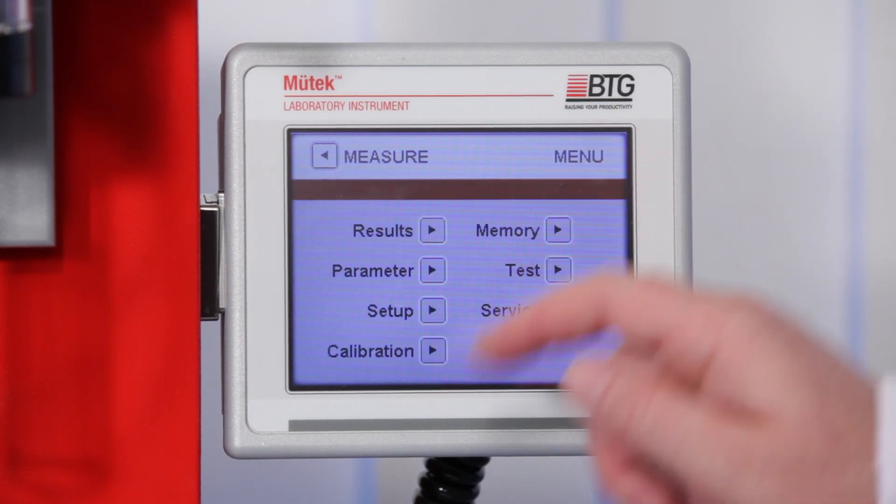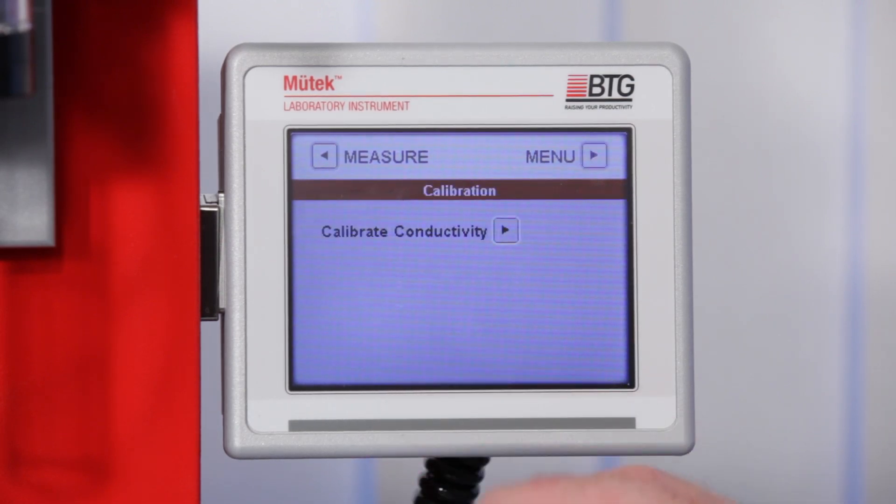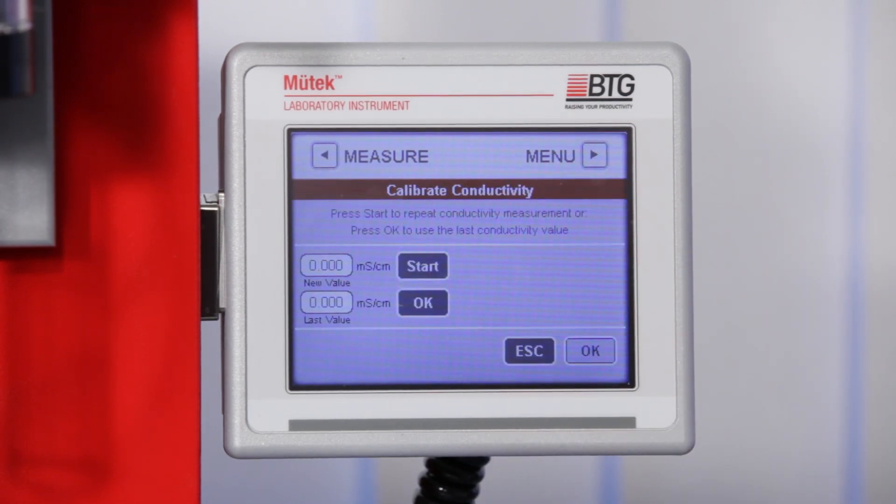Press the Menu button to return to the main menu. In the calibration menu, the so-called EL factor can be modified. The EL factor is used to calibrate the conductivity measurement of the SZP.